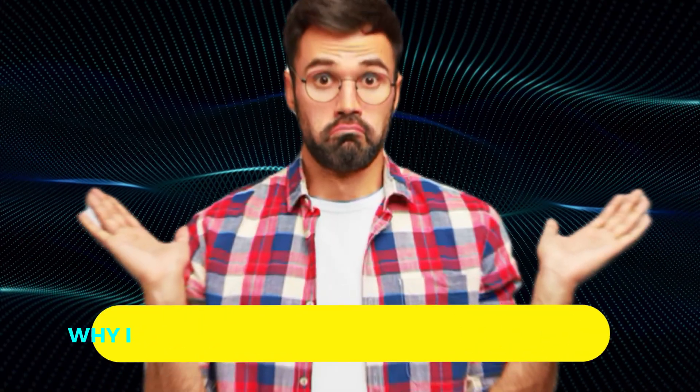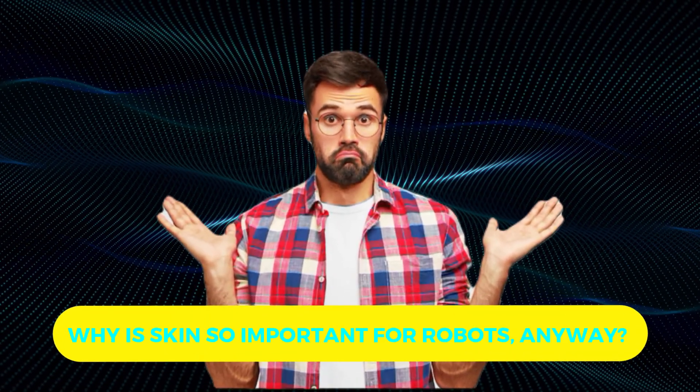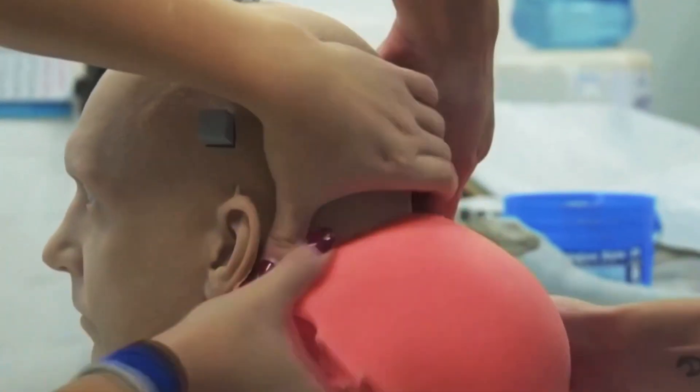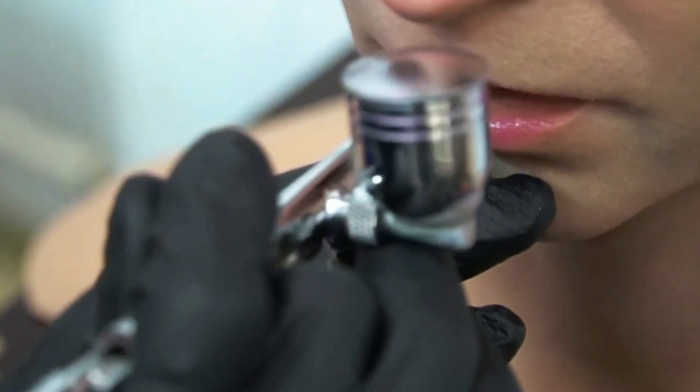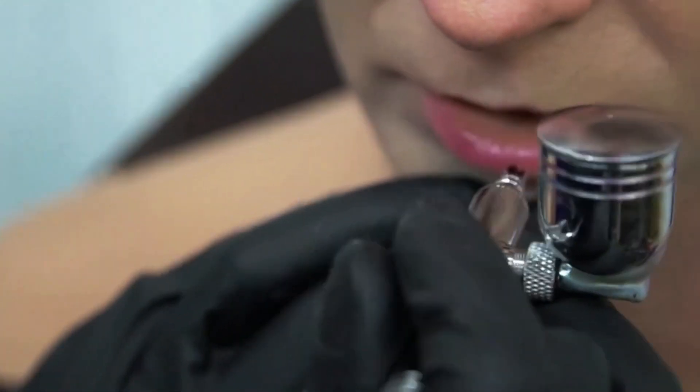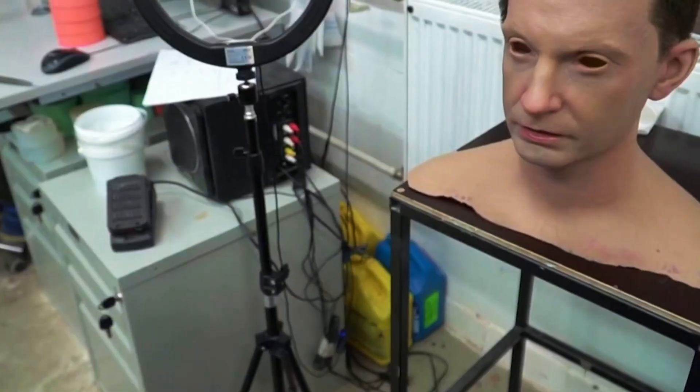So why is skin so important for robots anyway? It's not just about aesthetics. It's about functionality. Skin is our largest organ and is essential for our survival. It allows us to sense our environment, regulate our body temperature, and protect ourselves from harm.